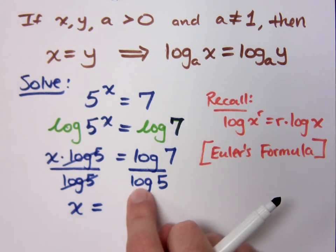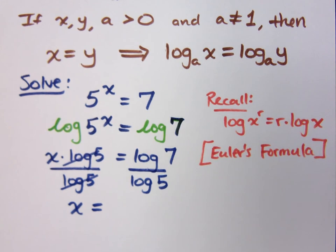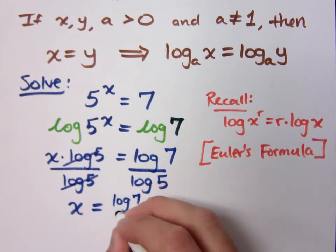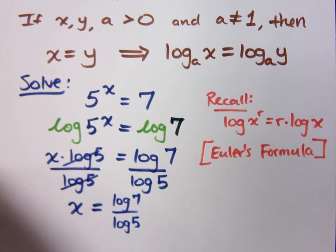Do you want that written like that? I mean, what are you looking for? I'm wanting the answer. So log of 7 over log of 5 is an exact answer. Yes, it is. Okay. So x is equal to log of 7 over log of 5. This answer is exact.